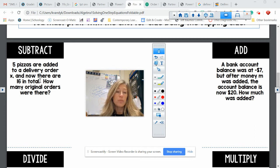If we see subtract, what do we do? So it says five pizzas are added to a delivery order X. So what does that look like? Well, I'm writing with my mouse pad, so it's going to be a little messy. So five pizzas are added to a delivery order X. Let's start with X. And add five to that. And the total now is 16. Are you writing this with me? I hope. How many original orders were there?